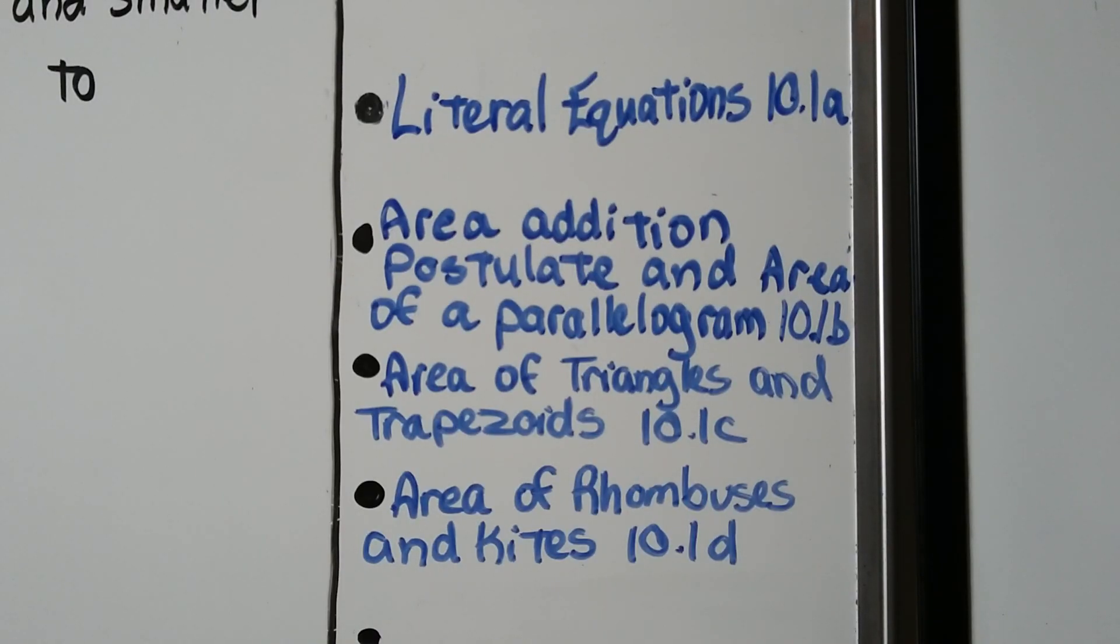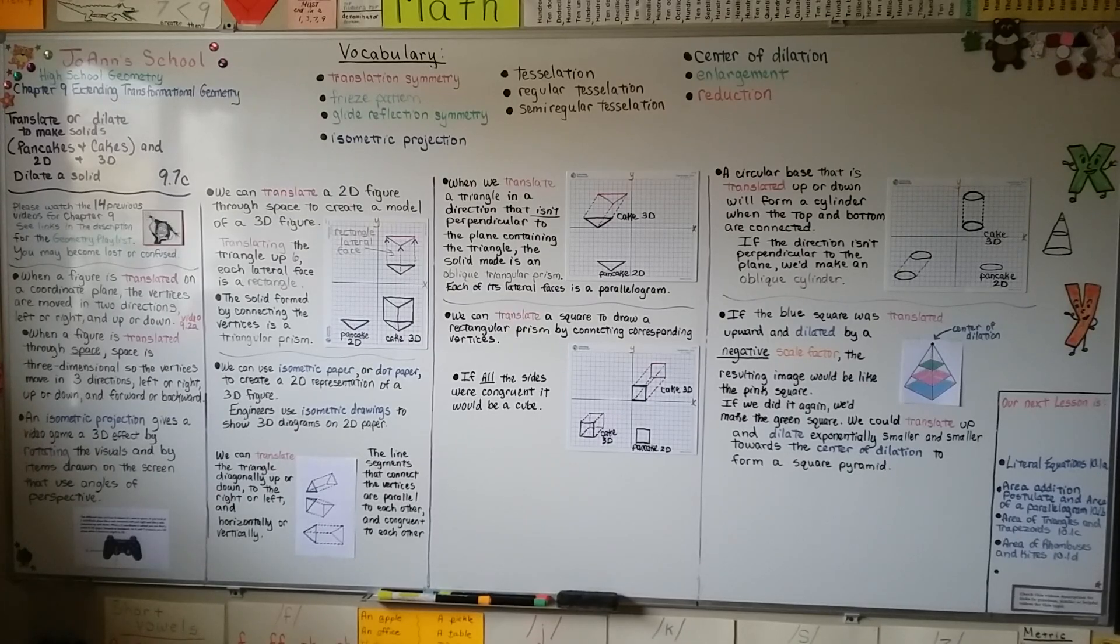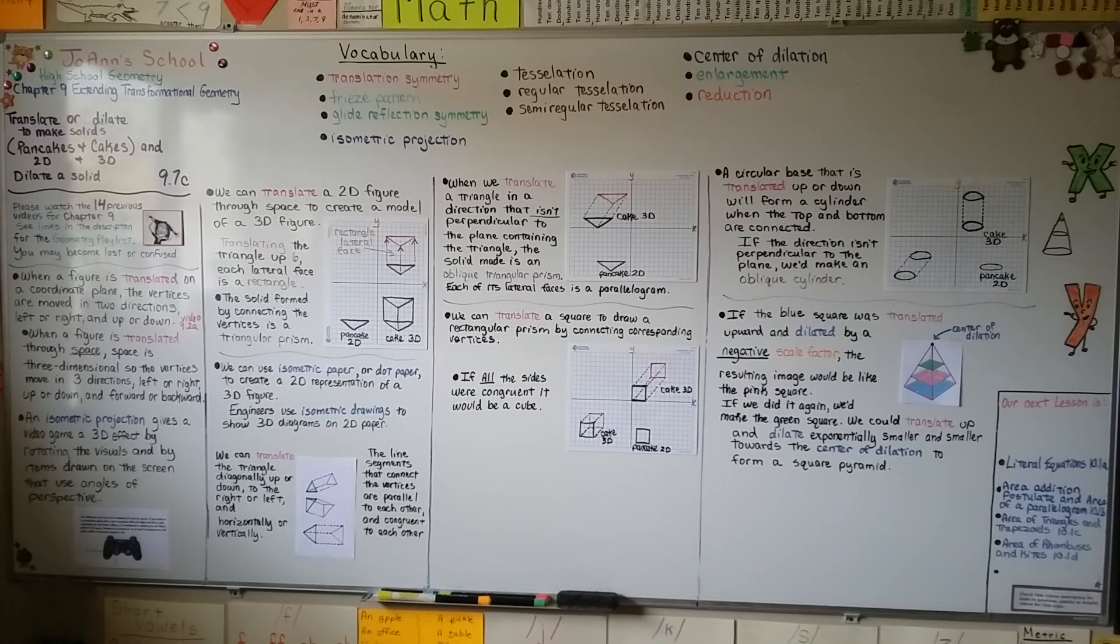So that's it for chapter 9. We're going to move on to chapter 10 and talk first about some literal equations, and then we're going to talk about area. So for those of you who are discussing cakes and pancakes in geometry, which I think they use in the Carnegie books, now you know what they are. And you know about 2D and 3D and translation, and even dilation. Don't forget to hit the like button for me. It really helps me out with the YouTube algorithm. And if you can let the ads run, that also helps me out because that's how I make my living. I'll see you next time. Bye!